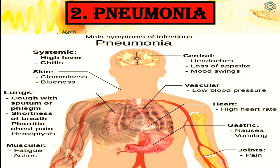Symptoms of pneumonia include systemic signs such as high fever and chills; skin signs such as cyanosis (blueness); lung signs such as cough with sputum, shortness of breath, pleuritic chest pain, and hemoptysis; muscle fatigue and aches; headaches, loss of appetite; low blood pressure; high heart rate; nausea, vomiting; and joint pain.